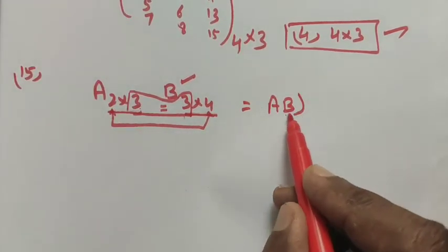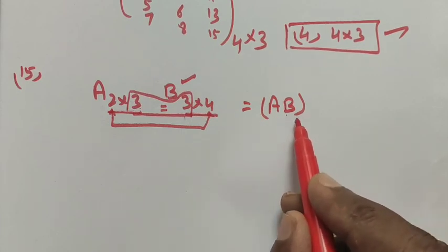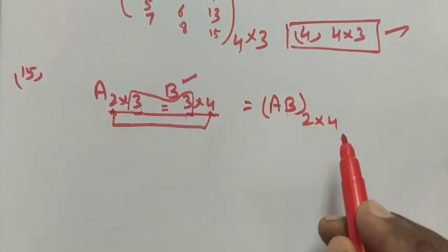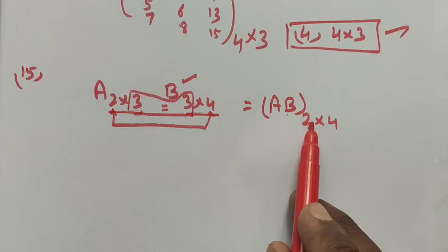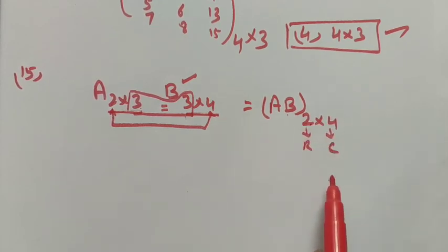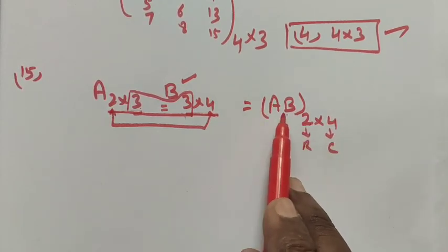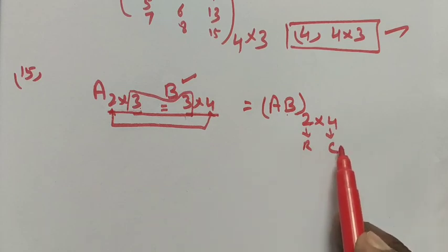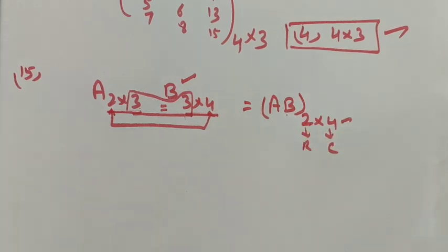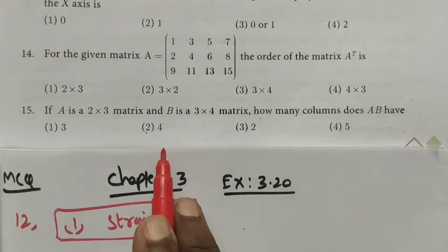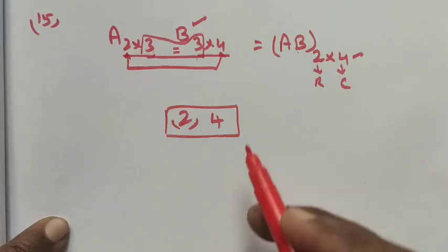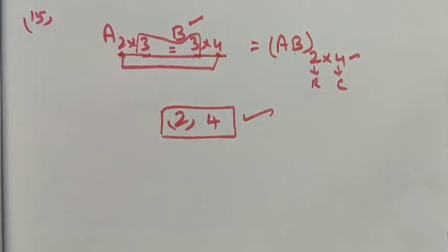The resulting AB matrix has order 2 by 4, where 2 is the number of rows and 4 is the number of columns. Since they are asking for the number of columns of AB, the answer is 4. Option two, 4, is the correct answer.